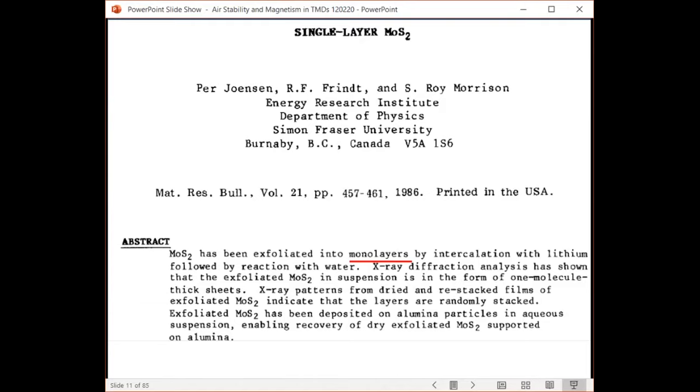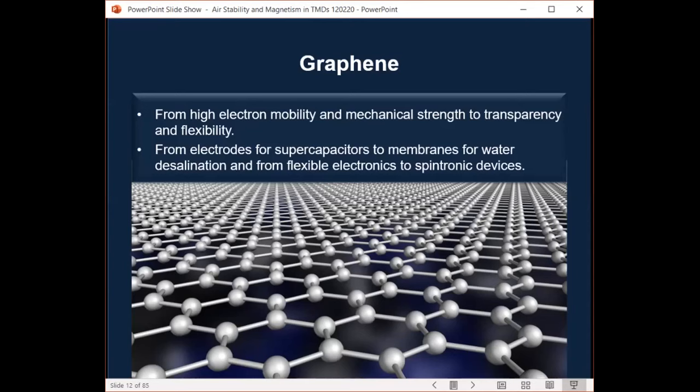Anyway, the key to the success of graphene is this range of remarkable properties from high electron mobility and mechanical strength to transparency and flexibility. The light graphene interaction can be adjusted using an electric field or chemical doping making graphene based photonic devices tunable. This is reflected in its range of potential applications from electrodes for supercapacitors to membranes for water desalination and from flexible electronics to spintronic devices.